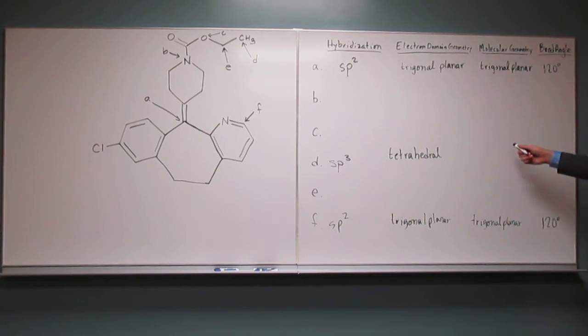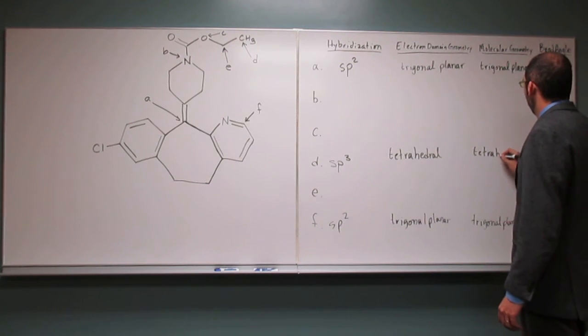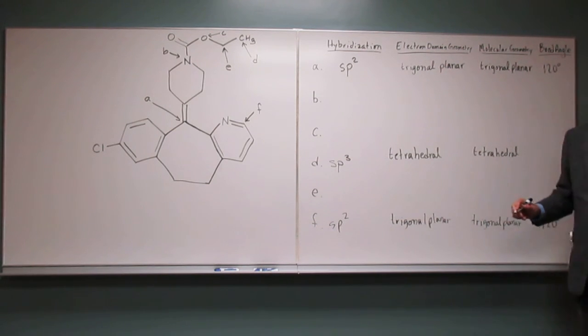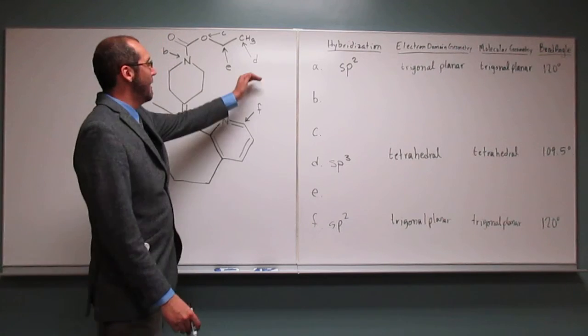Okay, so tetrahedral, molecular geometry? Tetrahedral. Tetrahedral too. Why would you say that one? Do you remember? Because all the electron groups have an atom on the end of them, right? So that's the molecular structure. And then what would be the bond angle if we had that? 109.5. 109.5. Very good. Man, just a few minutes ago you were having a hard time with this. I'm real proud of you. You're doing really good.